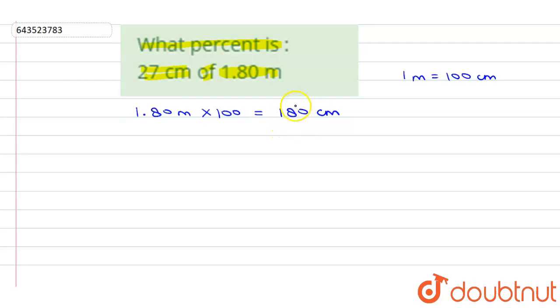...percent of 180? So first we will find what part 27 is of 180: 27 upon 180. And now we will convert it into percentage, so we have to multiply by 100. Whenever we have to...